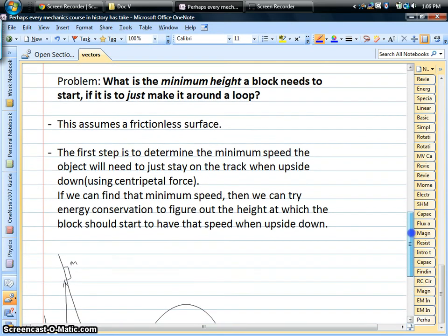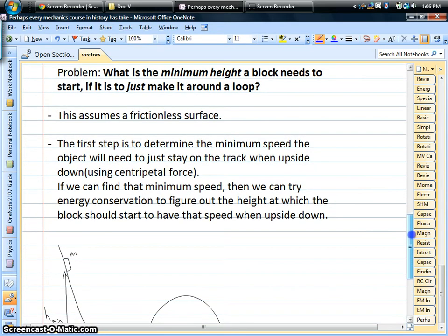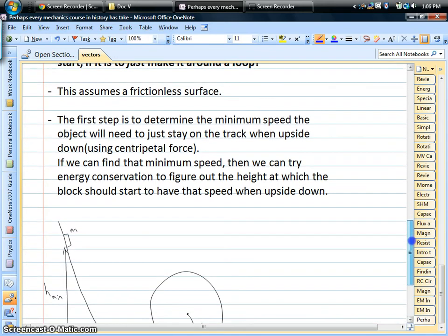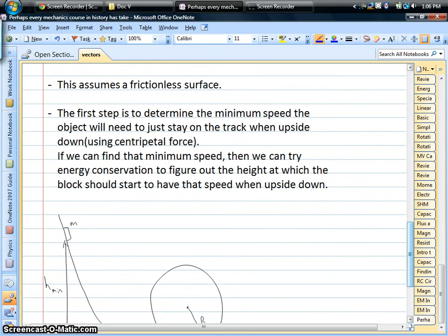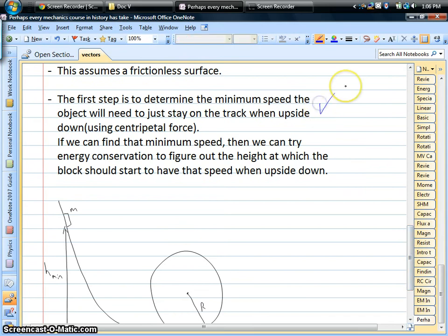Okay, so this is kind of like your minimum conditions that you need for this to work. So if you're an engineer, this is something that you'd be interested in. Now it's a frictionless surface. And I guess probably the first step in the process is to try to figure out what the minimum speed is when you're upside down. Obviously when this block is upside down up here at the top of the loop, that's kind of your critical point.